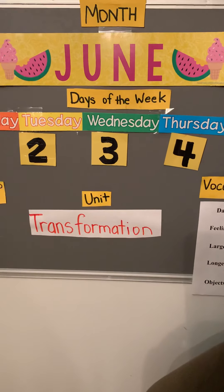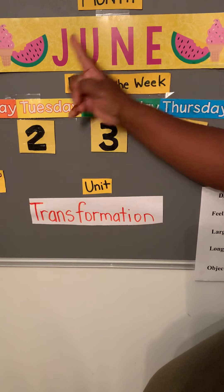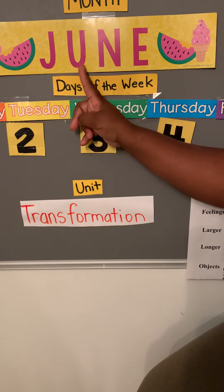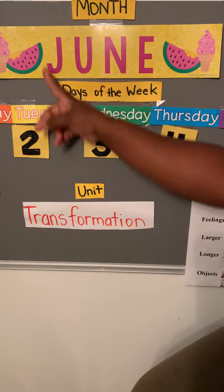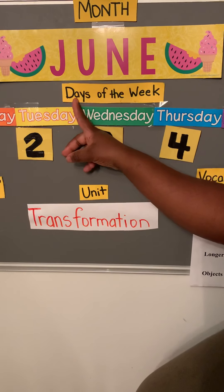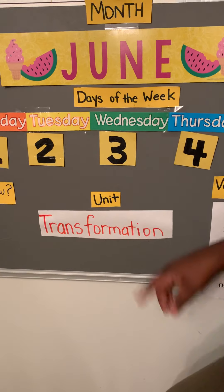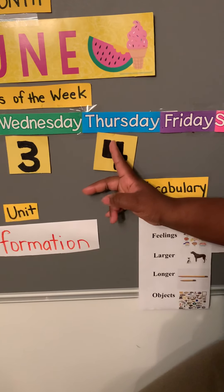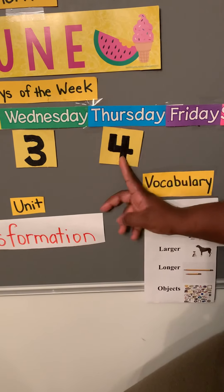So what month are we in? We are in the month of June — J-U-N-E spells June. And what day of the week is it? Let's see — yesterday was Thursday the fourth.